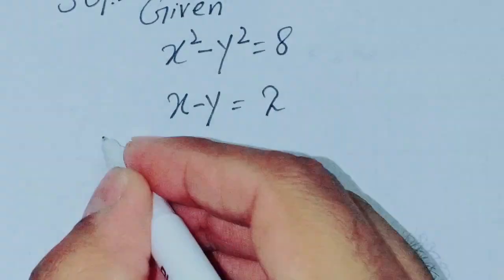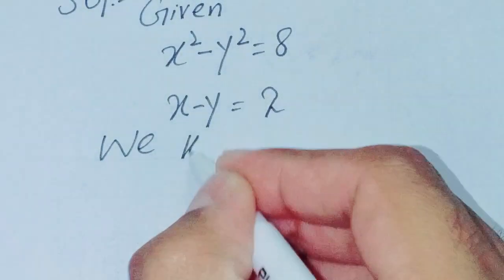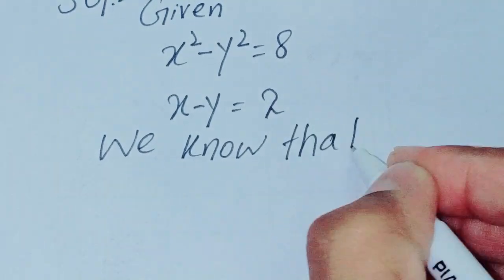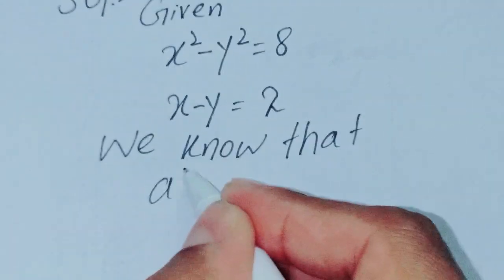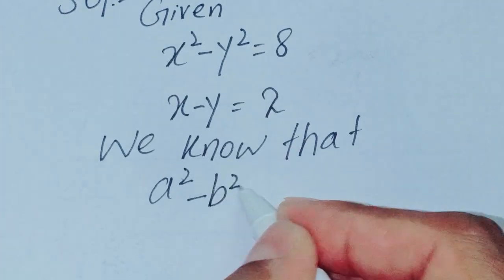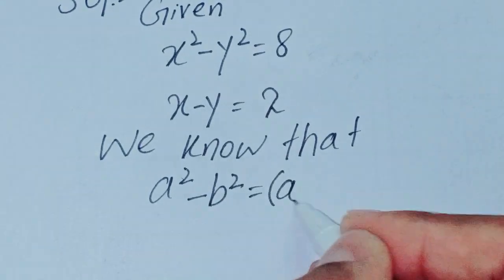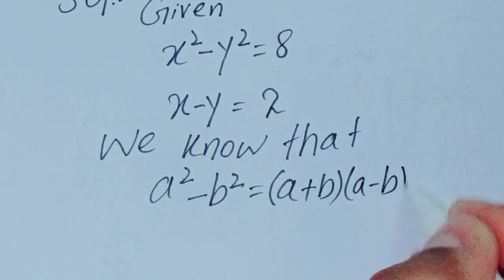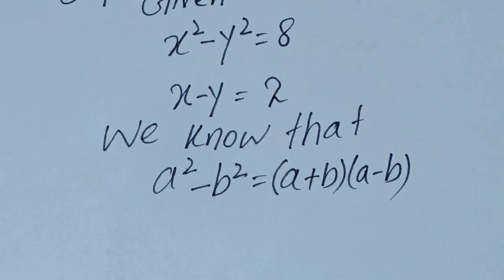We know that the formula is: a squared minus b squared is equal to a plus b into a minus b.